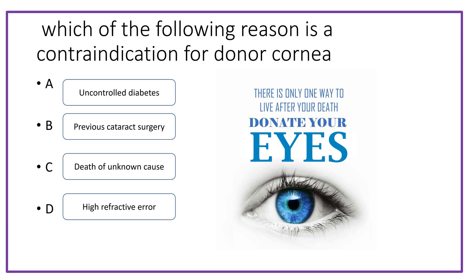Which of the following is a contraindication for a donor cornea? Option A: uncontrolled diabetes; option B: cataract surgery; option C: death of unknown cause; option D: refractive error. The answer is option C, death of unknown cause.